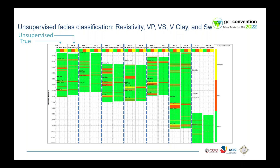Here we can see the unsupervised facies classification using resistivity, p-velocity, s-velocity, v-clay and water saturation as input. Notice that only a few thin layers of paste sand are classified in wells 1, 3, 4 and 6, and most of the sands are also misclassified. This is exactly what happened with my colleague — he added all well logs available and achieved results that were not what he was expecting. Because this kind of algorithm groups similar attributes without the need for prior information, so it is doing what it is supposed to do. That is why we need to check the petrophysics. The RAND index for this case is 0.77 — it is a high value, but most of the facies are shale, which is the reason for this high value.